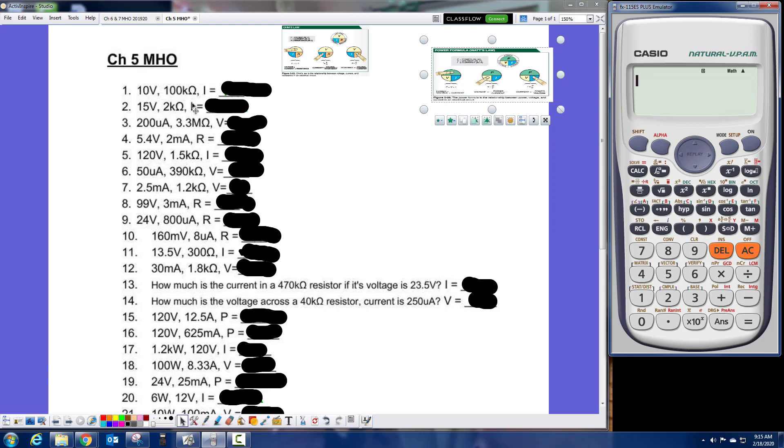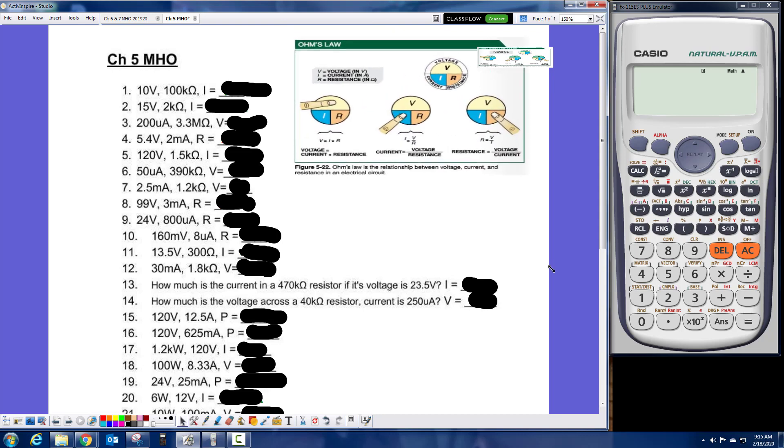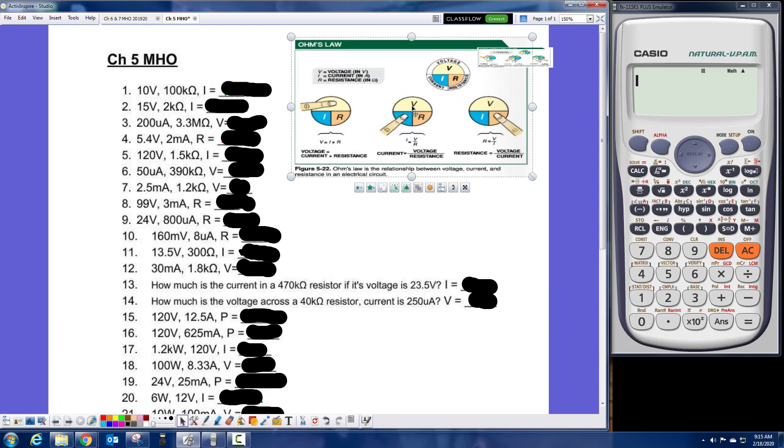Alright, starting with number one. First question is what am I looking for? And I am looking for current. So using my Ohm's Law, if I cover up the current, it's V divided by R. So I have 10 volts, put in 10. I like to use the over under button. And I have 100K ohms. You can hit S to D to get a decimal, but it really doesn't matter because we're going to hit engineering to get our answer anyway. And so we're looking for current. So this is 100 microamps.